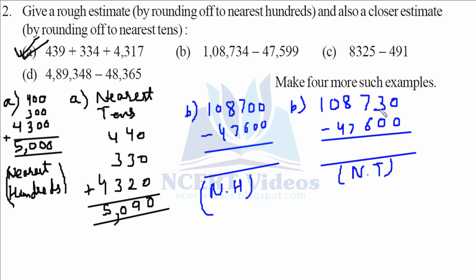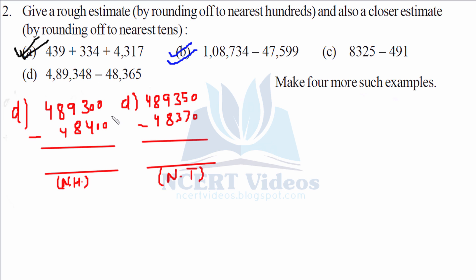For part B, we simply subtract the rounded values. For part C, we write the numbers in terms of nearest hundreds and nearest tens, then subtract. The subtraction gives us: zero, zero, zero, nine and zero, four, four — that makes forty thousand nine hundred.